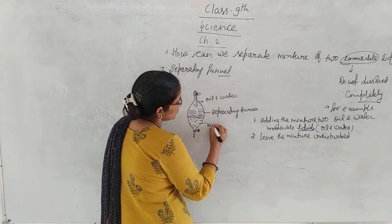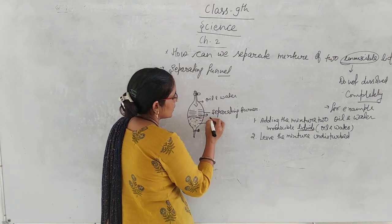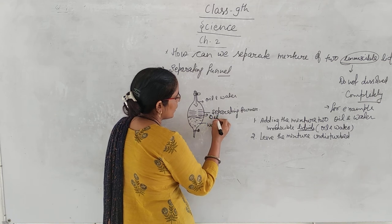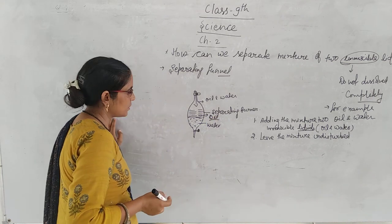What is the bottom layer? Water, because water is heavy and denser. The second layer above is oil, because oil is lighter in weight compared to water.